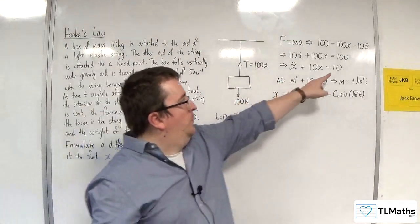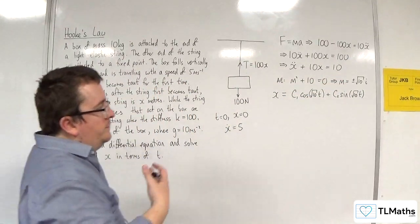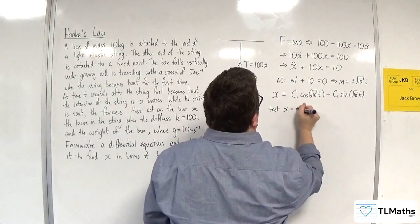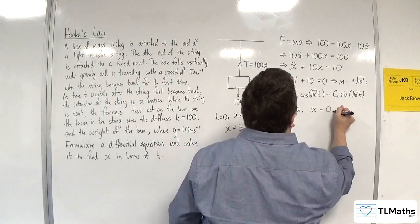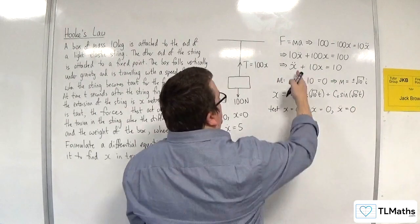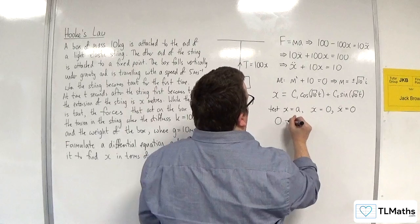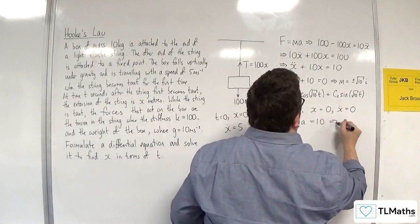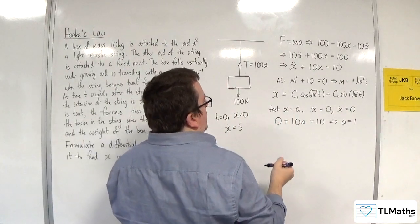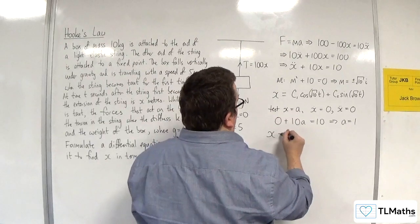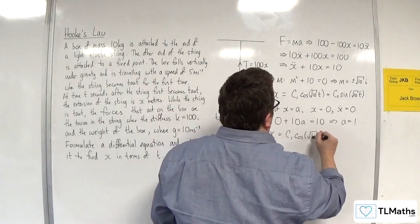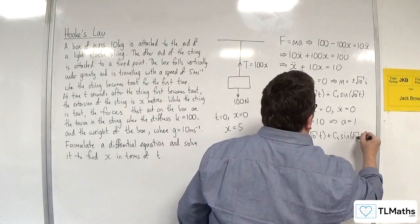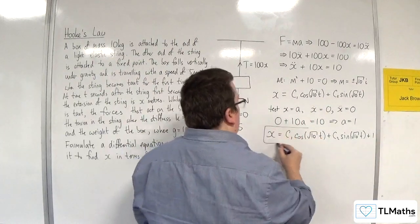Now I've got this equals 10 on the right-hand side, so I'm going to have to use a test function here. So we're going to test x is equal to a, but differentiating that we get 0, and x double dot will also be 0. Substituting in, we get 0 plus 10 lots of a, so 10a is equal to 10. So a is going to have to be equal to 1. So our general solution is c1 cosine of root 10t plus c2 sine of root 10t plus 1. That's my general solution.